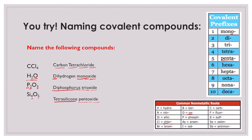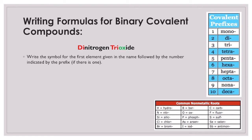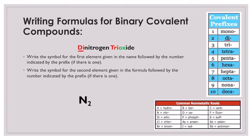Hopefully that was helpful. Now let's talk about how we translate a covalent compound's name into a formula. Step one is to write the symbol for the first element given in the name. So we've got dinitrogen - I write nitrogen, and since there's a prefix 'di' meaning two, I write a subscript 2 after nitrogen. Then I write the symbol for the second element followed by the number indicated by its prefix. Looking at the common non-metallic root, 'ox' is oxygen. 'Tri' is the prefix for three, so a subscript 3 after oxygen. So N2O3 is dinitrogen trioxide.